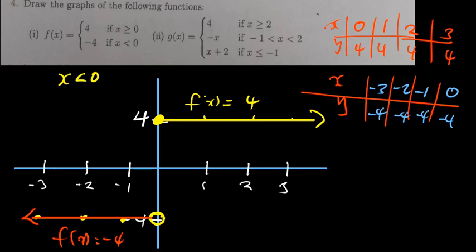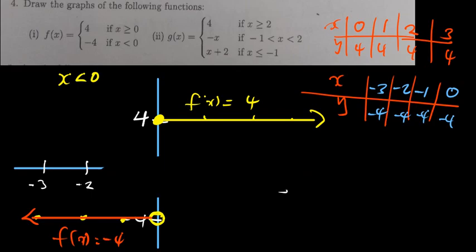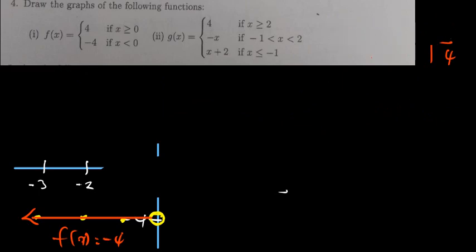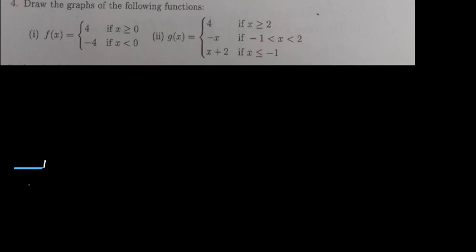So that is what it means when we talk about piecewise functions. It is not something complicated — if you understand these simple principles, it is going to be easy for you. Now let's dive into Part 2. We have g(x) with three functions this time: g(x) equals 4, negative x, and x plus 2. So we follow the conditions.